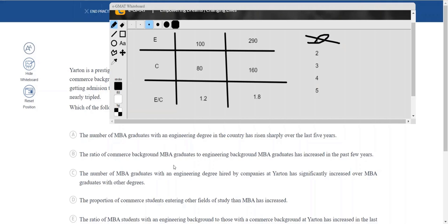The ratio of commerce background to engineering background MBA graduates has increased in the past five years. This actually goes against what we have proven. If E by C has increased, that means C by E should have decreased. So this is actually opposite of the correct answer.